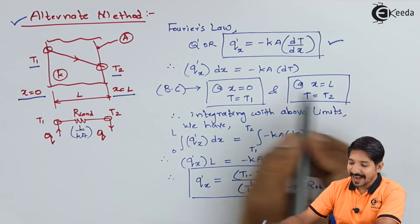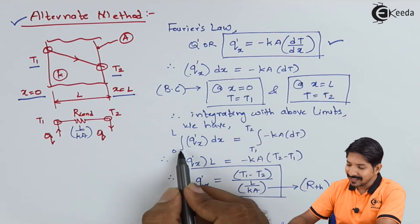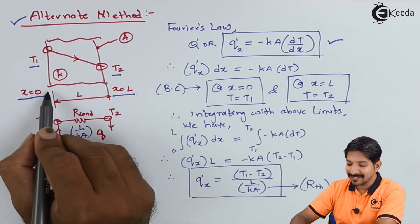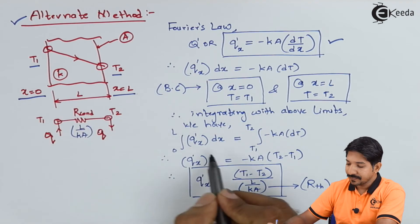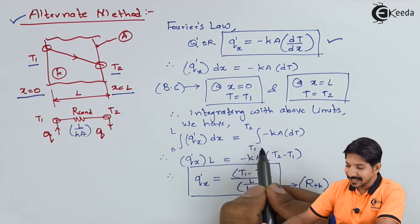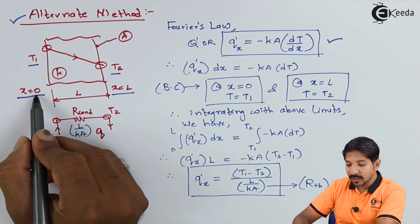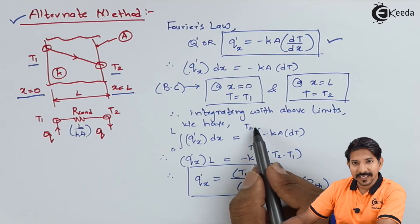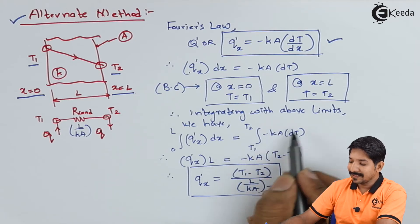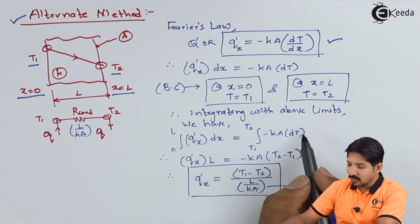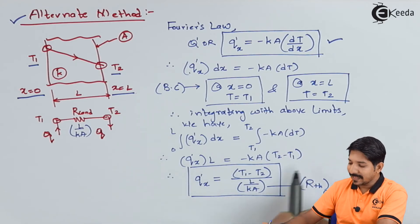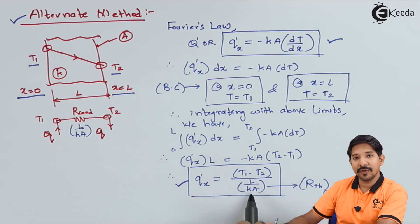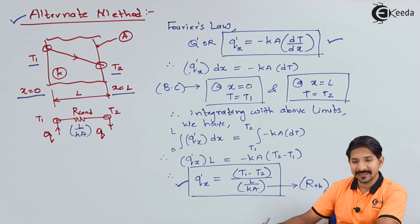If I use these two boundary conditions and integrate, I get: integral from 0 to L of Q(x)·dx = integral from T1 to T2 of (−K·A·dT). Going through normal integration procedure, we again get Q(x) = (T1 − T2) / (L / K·A), which is nothing but the thermal resistance of conduction. This is the same equation we had obtained previously.